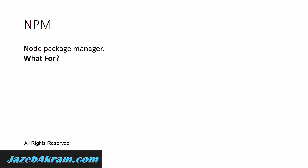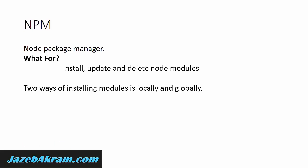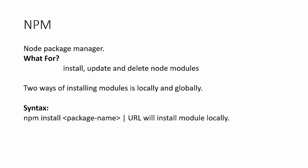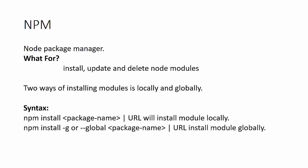npm stands for Node Package Manager, used for installing, updating, and deleting Node modules. There are two ways of installing modules — locally and globally. The syntax is simple: write 'npm install' followed by the package name to install locally. To install globally, add '-g' or '--global' before the package name. For example, to install the 'fs' module for file operations, run 'npm install fs', or 'npm -g install fs' to install it globally.